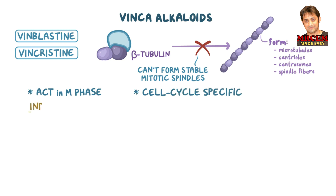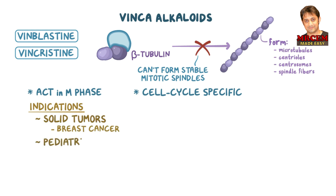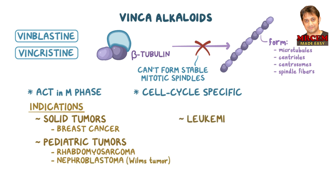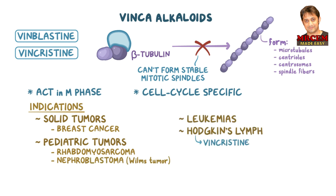Vinca alkaloids are used for solid tumors like breast cancer, pediatric tumors like rhabdomyosarcoma and nephroblastoma or Wilms tumor, and leukemias. Vincristine is also used for Hodgkin's lymphoma, while vinblastine is used for non-Hodgkin's lymphoma.